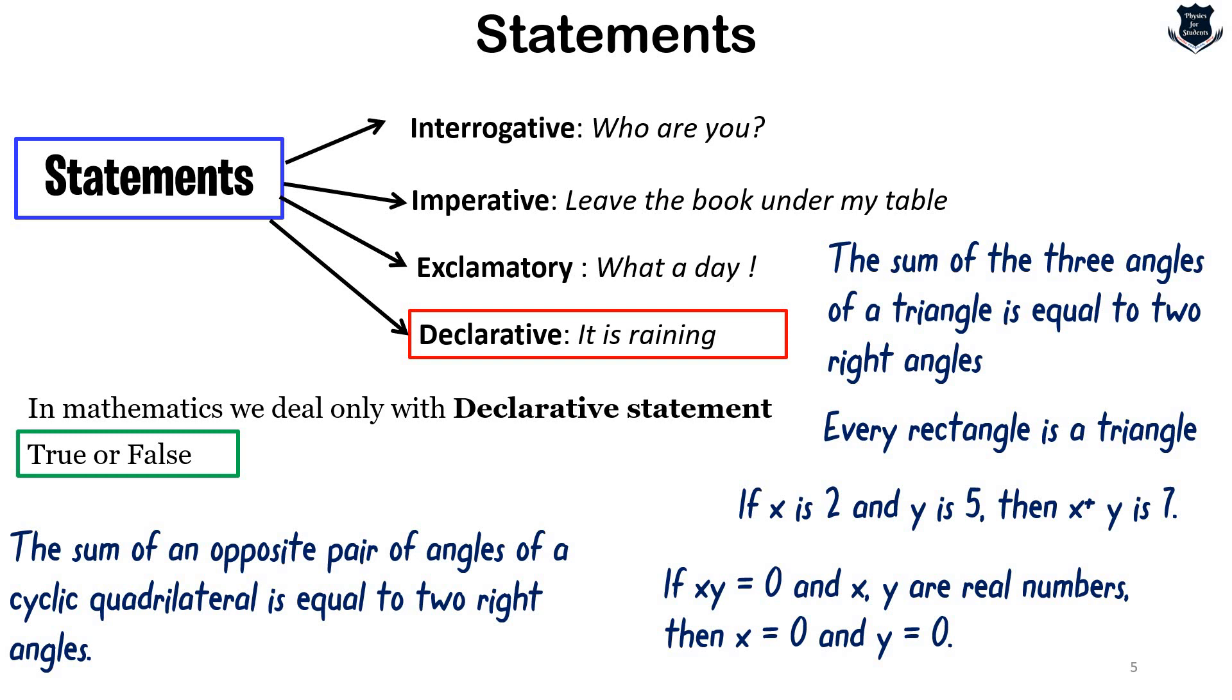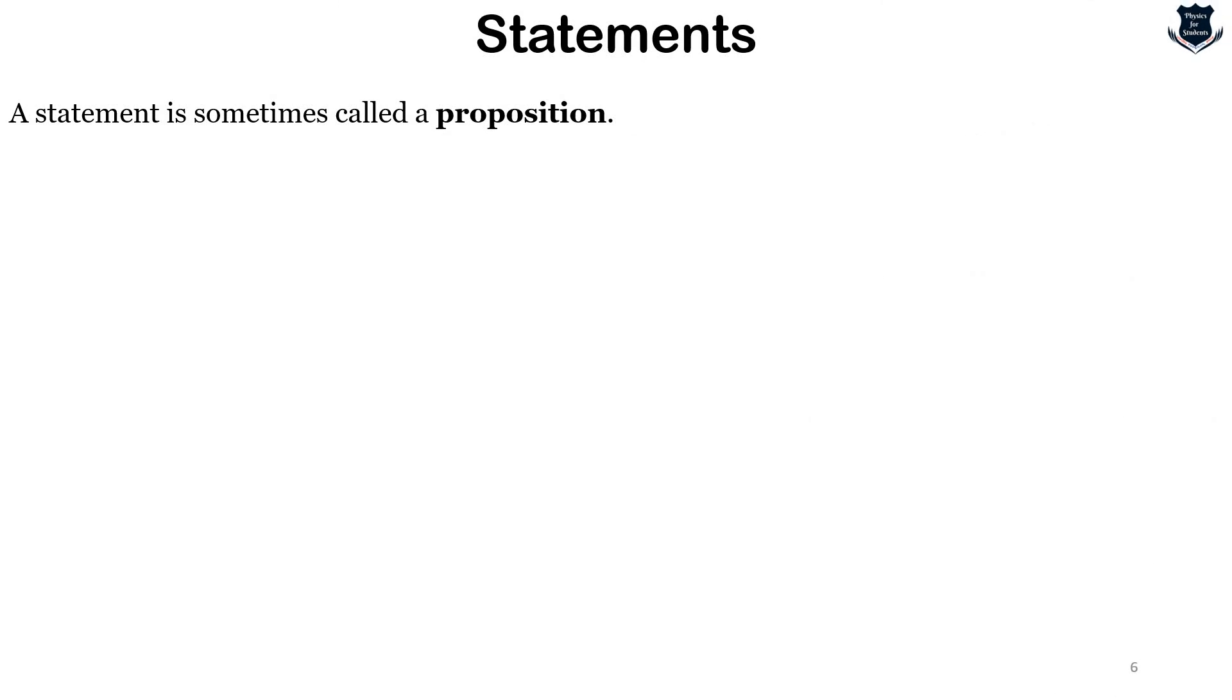Much of our work in mathematics deals with statements, and a statement can also be called a proposition. The key distinction is that there should not be any ambiguity. To be a statement, a sentence must be either true or false. It cannot be both.